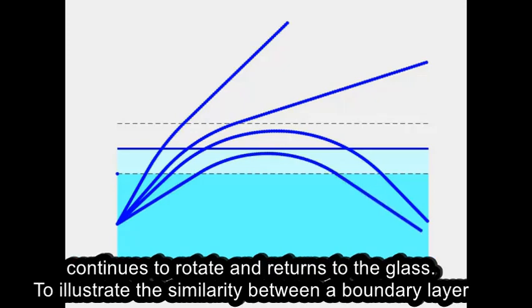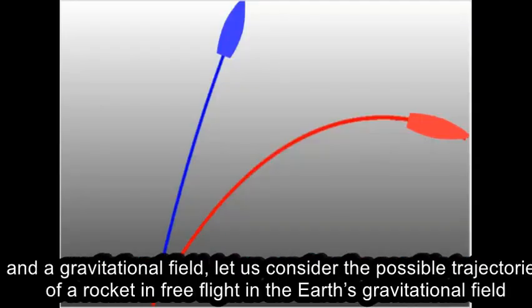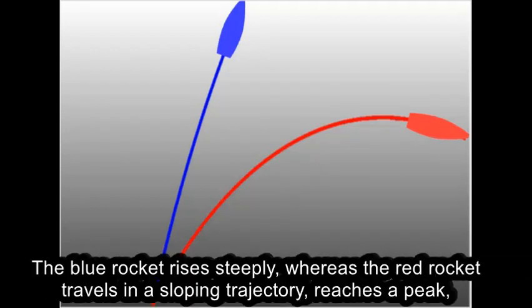To illustrate the similarity between a boundary layer and a gravitational field, let us consider the possible trajectories of a rocket in free flight in the Earth's gravitational field. The blue rocket rises steeply,